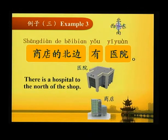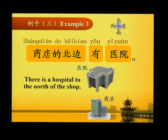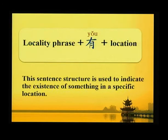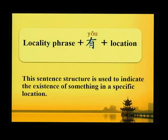例子三 Example three: 商店的北边有医院 — There is a hospital to the north of a shop. This sentence structure Locality Phrase plus 有 plus Location is used to indicate the existence of something in a specific location.